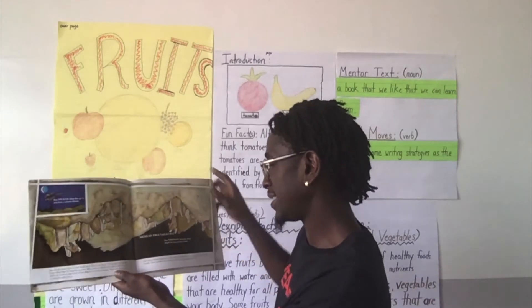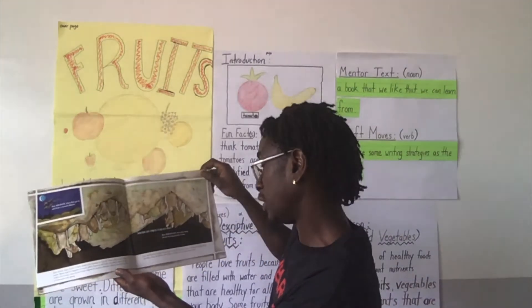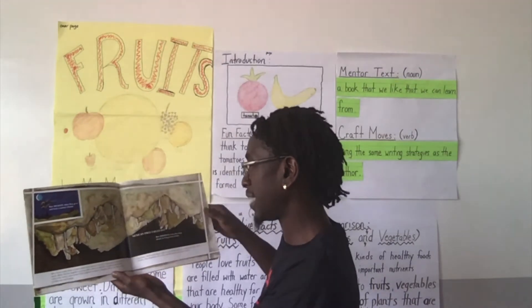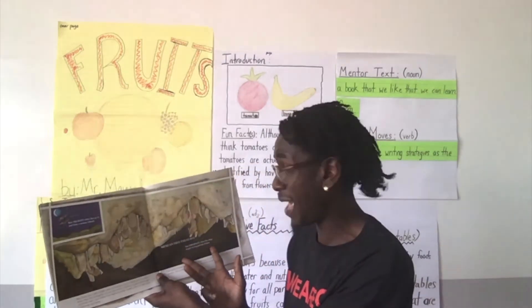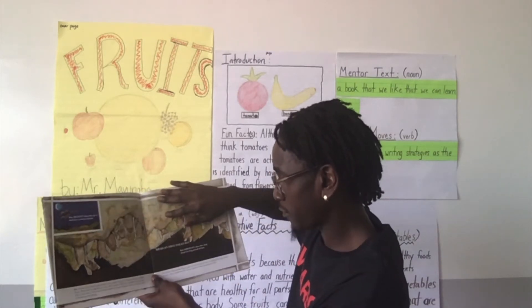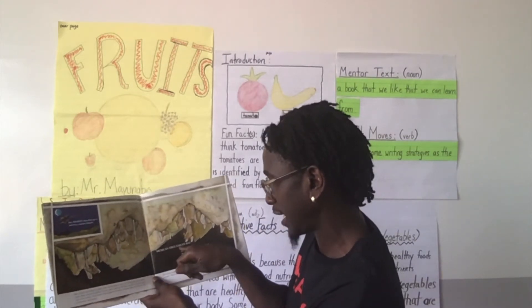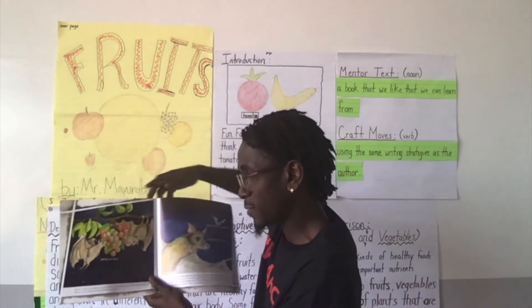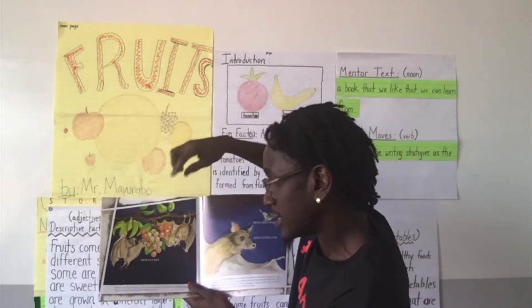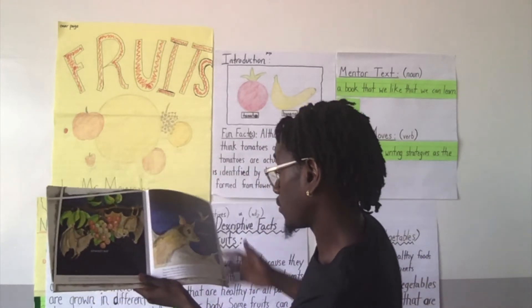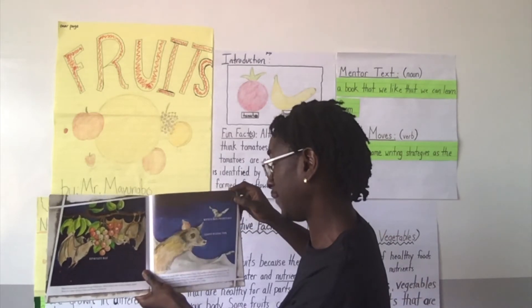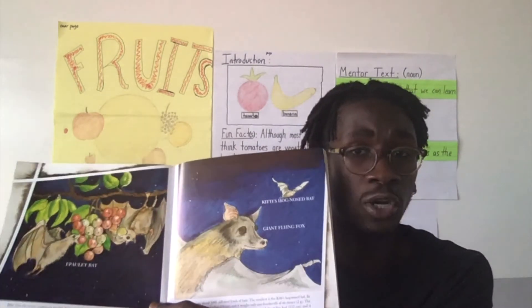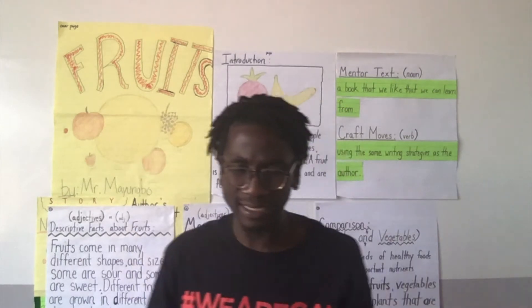Just before hibernating begins, bats eat lots of food to live on during the long winter months. Their heartbeats slow down and their body temperatures drop. Above, we have a text feature — a diagram with a label — this is a Mexican free-tailed bat. On the next page, another text feature: an epi-tailed bat, Kitty's hard nose bat, and a giant flying fox. Those are all examples of the different kinds of our topic — different kinds of bats. That was our first example.